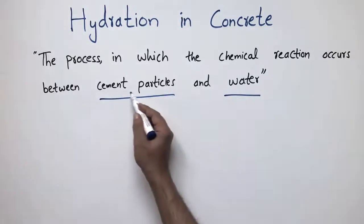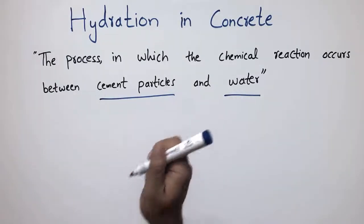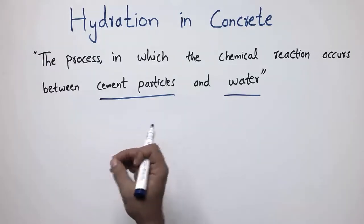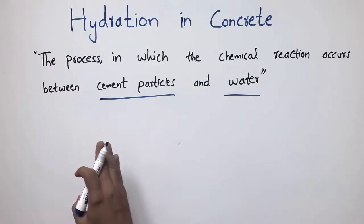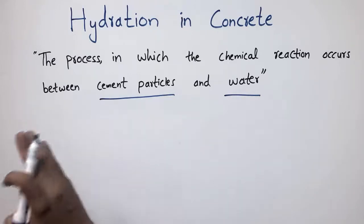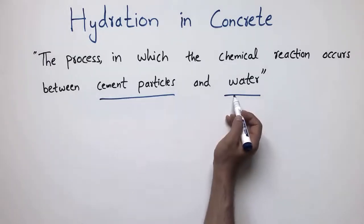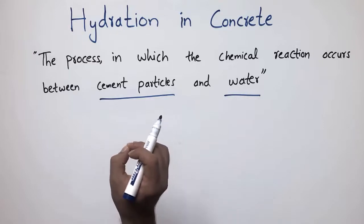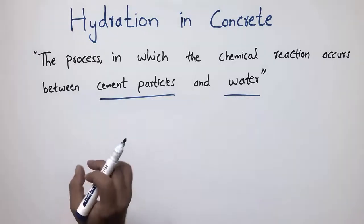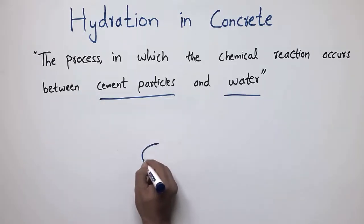When we pour the concrete on the field, we first mix the concrete. The constituents of concrete include cement, water, fine aggregate, and coarse aggregate. When cement particles and water mix with one another, a chemical reaction occurs between these two constituents. We call it hydration, and the process is known as the hydration process in concrete.